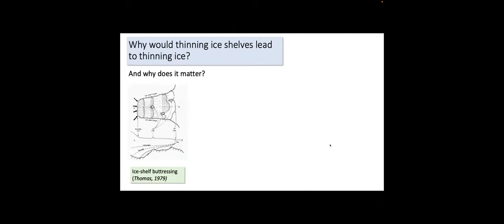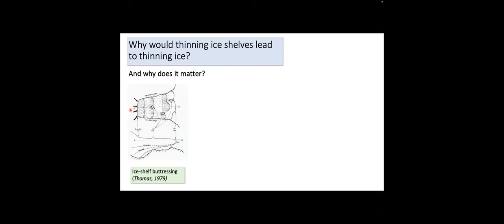Areas where there's strong thinning correspond to areas of strong ocean forcing and loss of ice shelf mass or frontal retreat, as shown by two high-impact studies. The first question — why does thinning of ice shelves lead to thinning of grounded ice — centers around what's known as ice shelf buttressing. Rob Thomas's 1979 paper and its figure really helped me understand and intuit ice shelf buttressing.